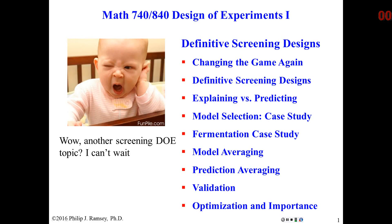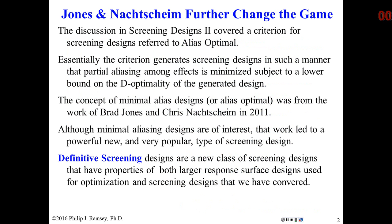Hello, this is the first of two videos on what are called definitive screening designs. Previously we have talked about many types of screening designs — D-optimal designs, I-optimal screening designs, and alias-optimal designs. The people who invented the alias-optimal designs also created something called definitive screening designs. This is a new class of design that is relatively small, yet has properties that allow it to be used for optimization in cases often handled by much larger response surface designs.